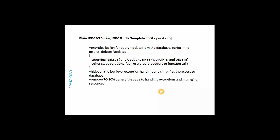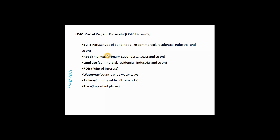The final goal is to expose some OpenStreetMap datasets as REST APIs. The OSM dataset includes building information with different building types — commercial, industrial, and residential — as well as roads, land use, points of interest, waterways, railways, and places. This data is free and covers every country in the world. I will work with datasets from Bangladesh and Germany.